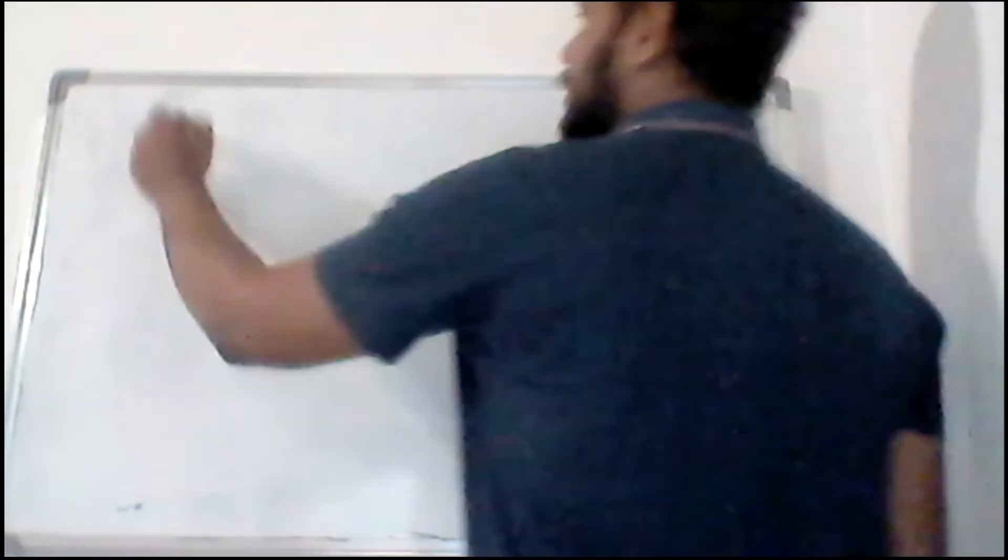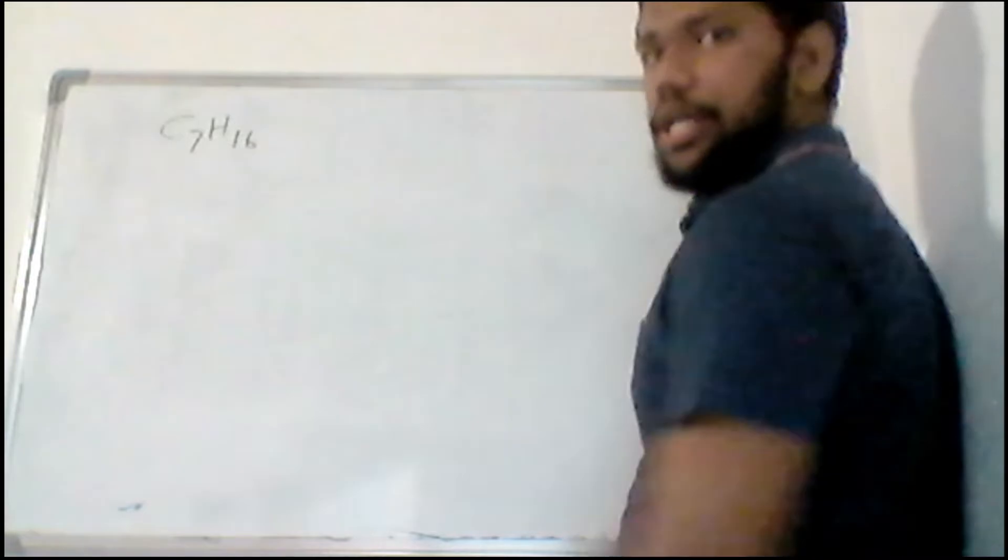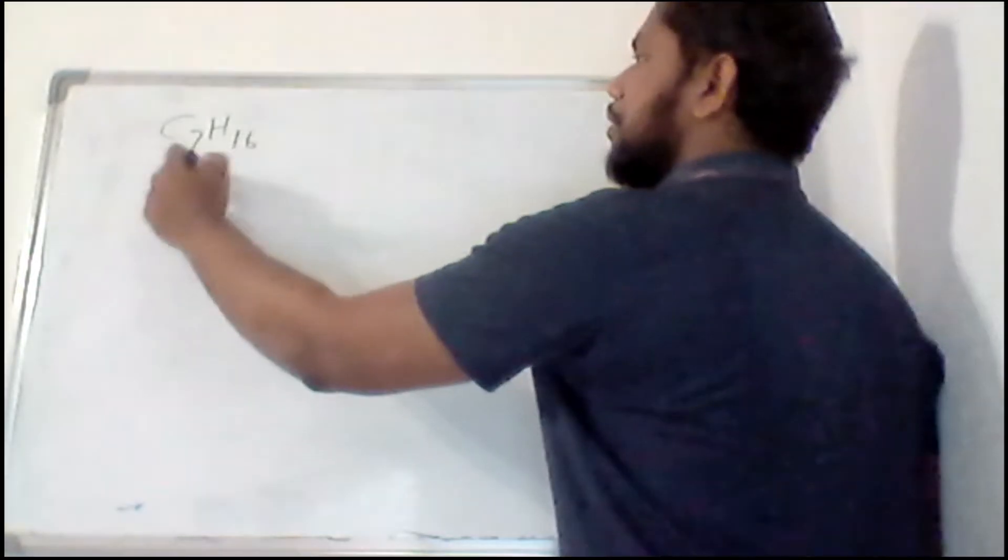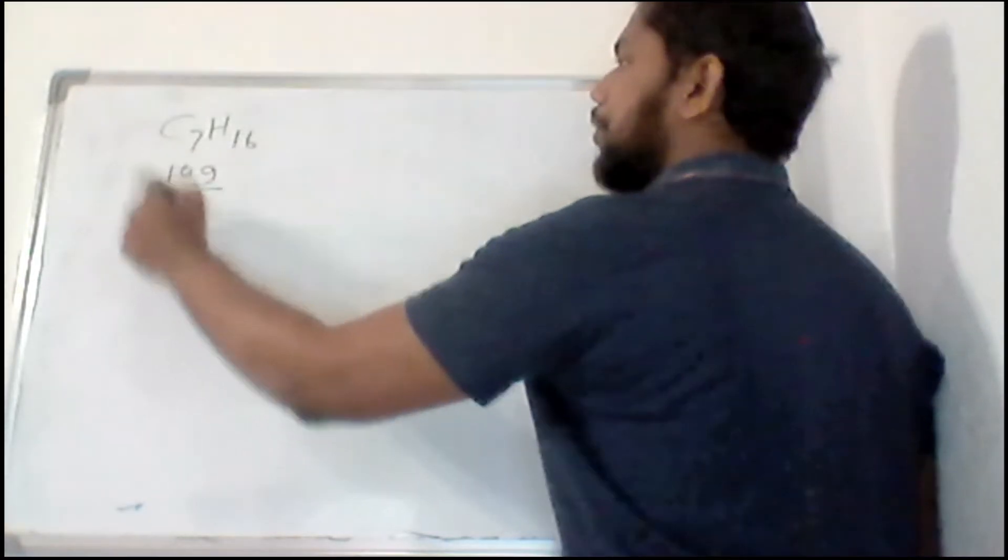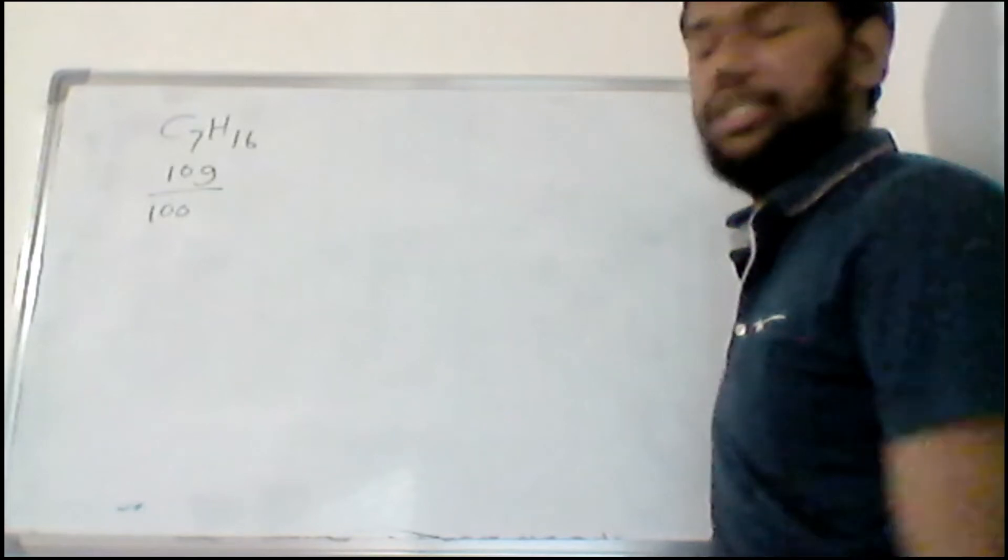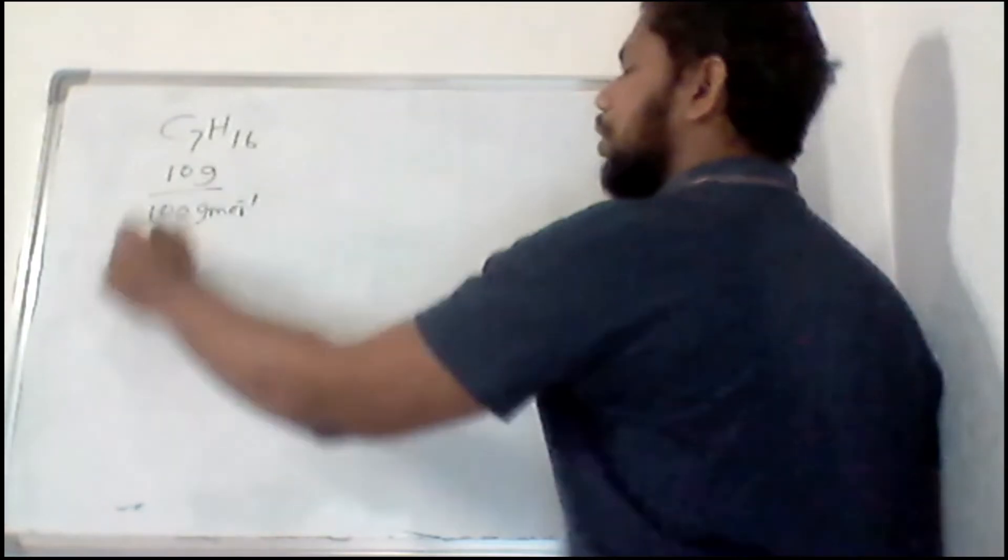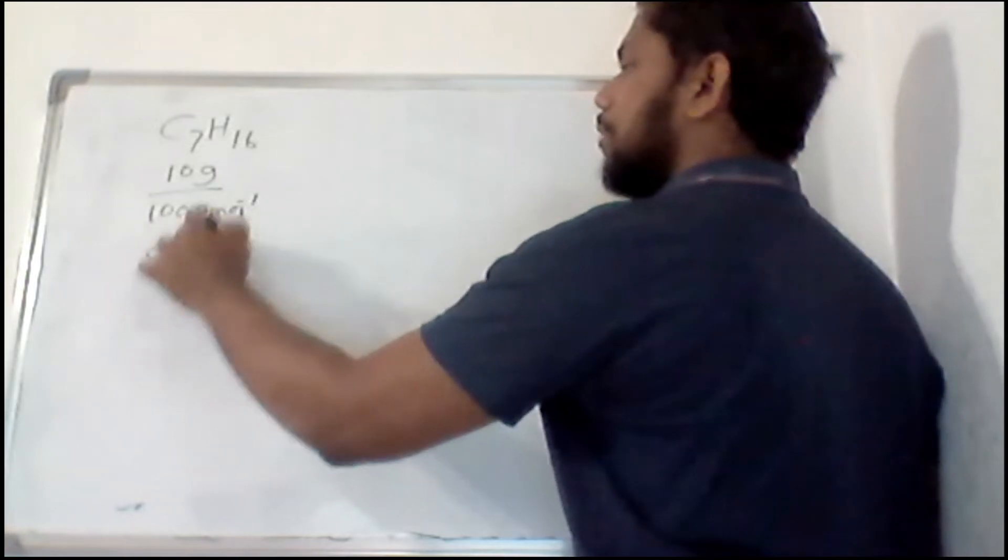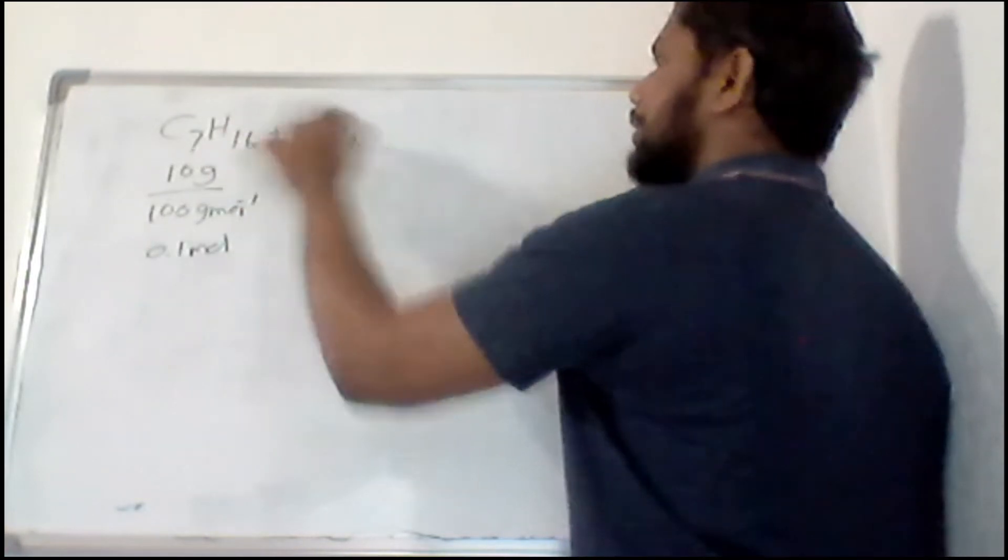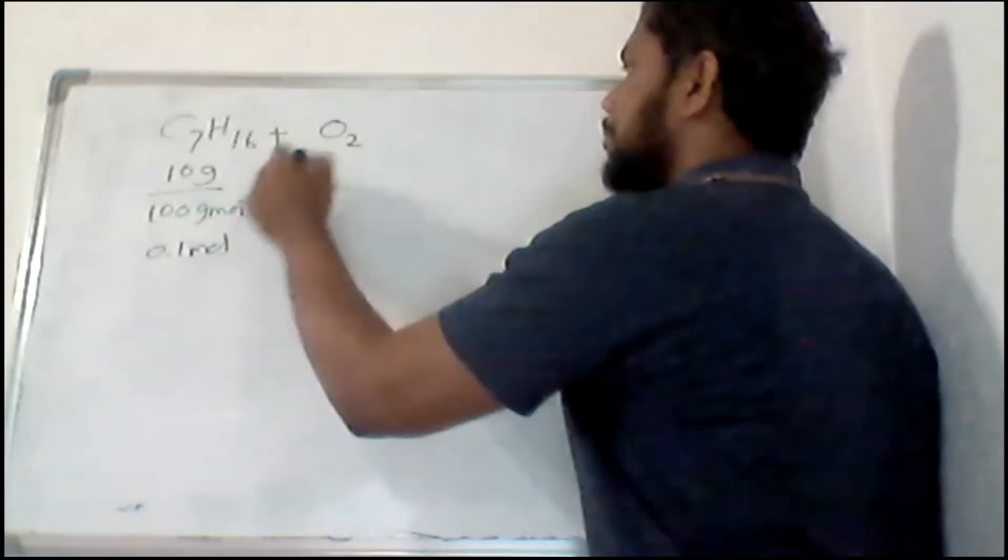Okay, so the question says you have heptane C7H16, and you are going to use 10 grams of it. When you calculate the molecular weight of heptane, it is 100 grams per mole. So basically you are going to use 0.1 mole of this with oxygen. They have given you are going to use 1.3 moles.